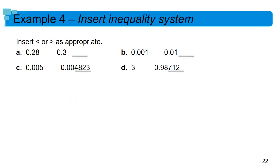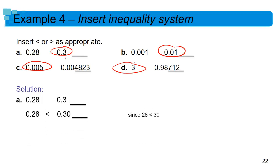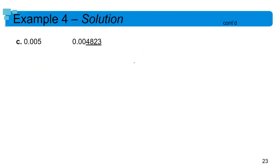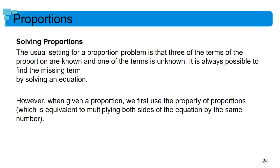If decimals match for a while, just keep looking at each place. For example, if the tenths place is 2 versus 3, the second one is bigger — easy. If the tenths and hundredths both match at zero, look at the thousandths: a 5 versus a 4 means the first is bigger. The same logic applies throughout: two zeros match, then look at the third digit — five is bigger than four, so that one's larger. It really is just that simple.